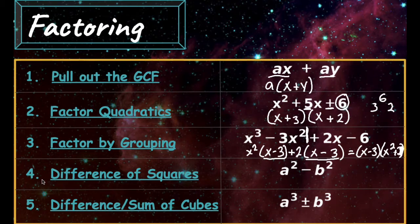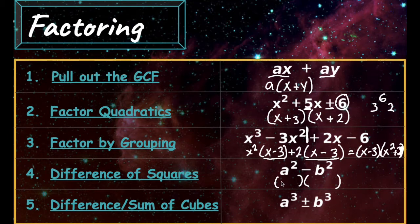The fourth way to factor is factoring a difference of squares. This is when we have a number squared minus another number squared. Similar to factoring quadratics, we're breaking down this binomial into two separate binomials. It's going to be the first number plus the second number, times the first number minus the second number.